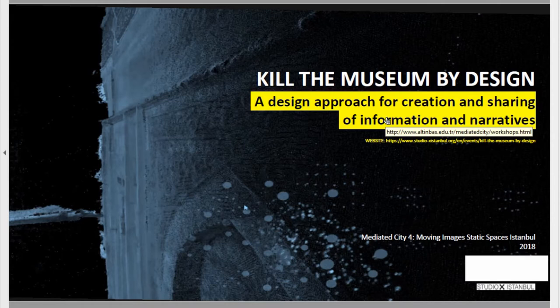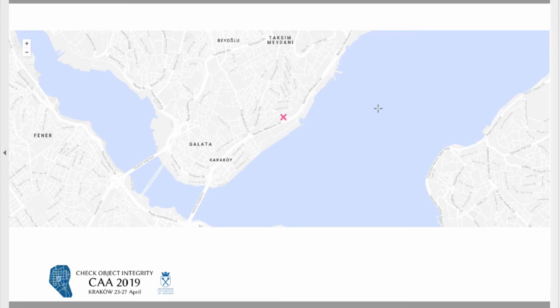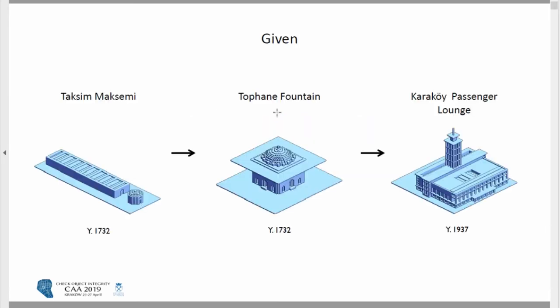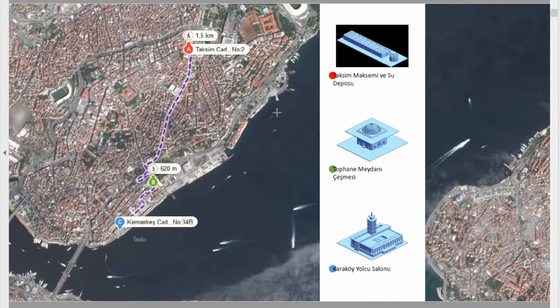Last year, we organized a workshop under the Medved City for Moving in Static Space in Istanbul. The title is Kill the Museum by Design. The location we chose is a cultural heritage site in Istanbul near the historical peninsula. It's called Galata, and we chose a cultural heritage site called Topani Fountain.